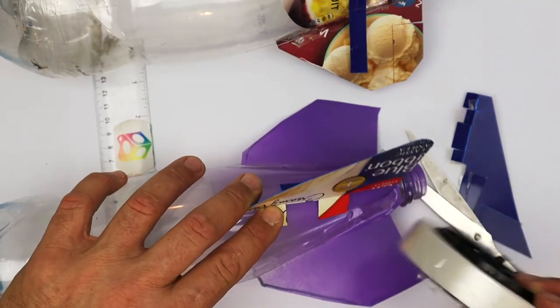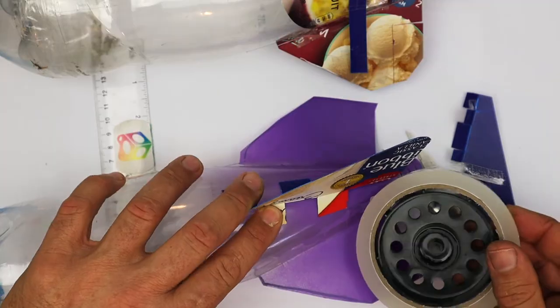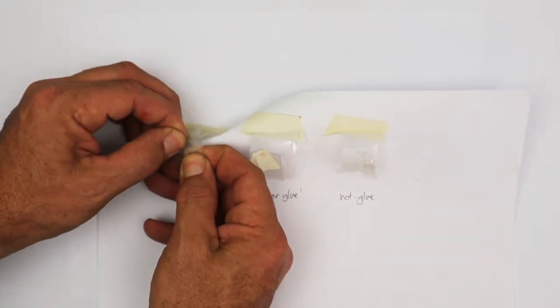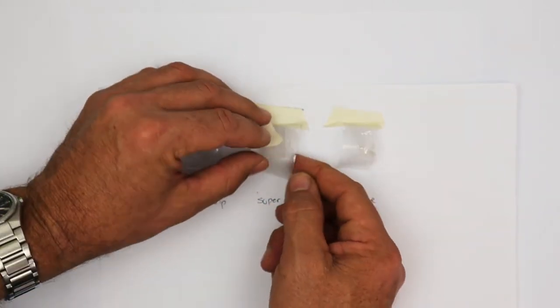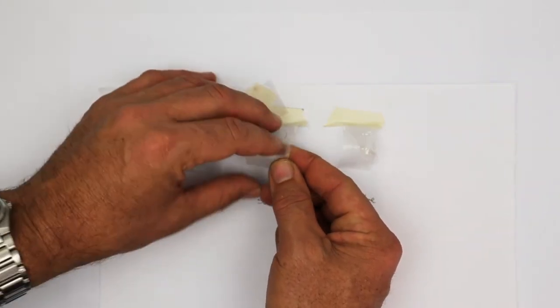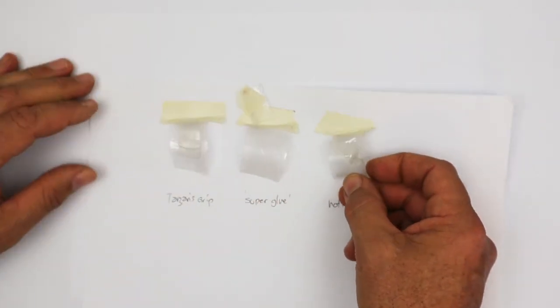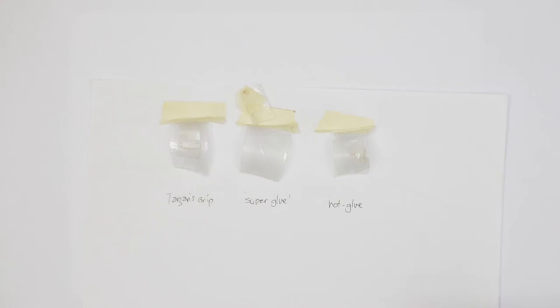If it's an air rocket, the good old sticky tape works well. Here's an experiment that I set up. I've used three different adhesives, gluing identical parts together, and found the super glue was too brittle. The hot glue held really well, but it relies on melting the bottle slightly. Best of all was the Tarzan's grip.